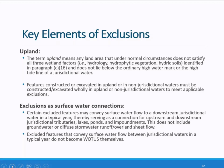For example, a non-jurisdictional ditch that connects to a tributary is not rendered jurisdictional just because it connects to it. There are certain excluded waters that can provide for a surface water connection between an upstream jurisdictional water and a downstream jurisdictional water in a typical year — such as through ephemeral features including ephemeral streams, swales, gullies, rills, and pools. Non-channelized connections, such as diffuse stormwater runoff and directional sheet flow over uplands, however, do not serve as a connection that can maintain jurisdiction of upstream waters under the final rule.